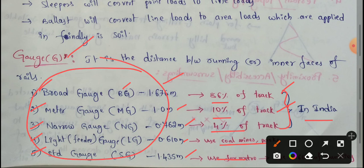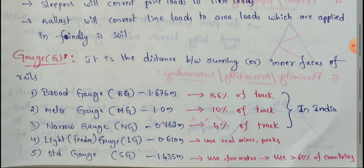So, to summarize the total gauges: broad gauge, meter gauge, narrow gauge, light gauge, and standard gauge. This is the total railway gauge overview. If you like this video, please like and don't forget to subscribe to my channel. Thanks for watching!